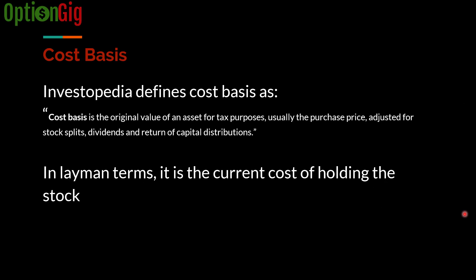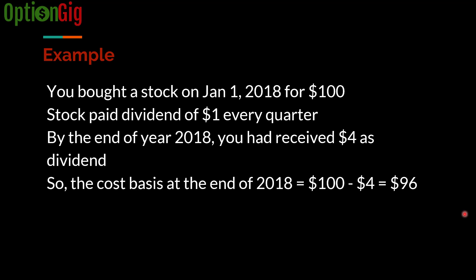First, let's understand what cost basis is. Investopedia defines cost basis as the original value of the asset for tax purposes, usually the purchase price adjusted for stock splits, dividends, and return of capital distributions. In layman's terms, it is the current cost of holding the stock — whatever amount of money is tied up in owning the stock. For example, if you bought a stock on January 1, 2018 for $100 and it pays $1 dividend every quarter, by year end you've received $4 in dividends, making your net cost basis $96.